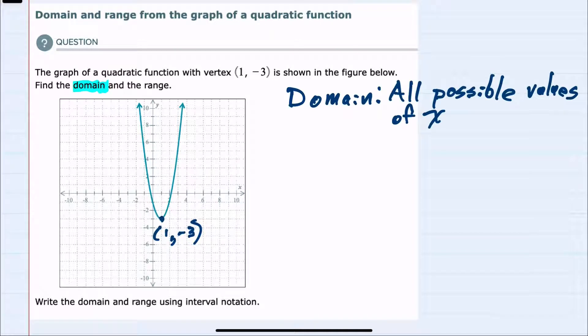We should recall that the domain is all possible values of x for this function. So looking along the x-axis and recognizing that this quadratic continues to go up and out, our domain in interval notation...